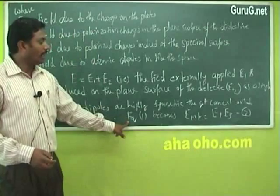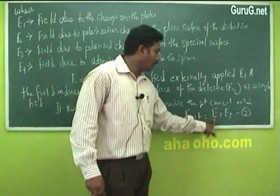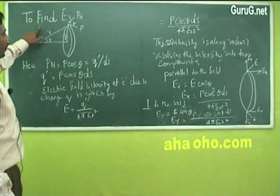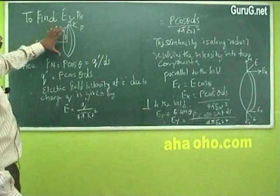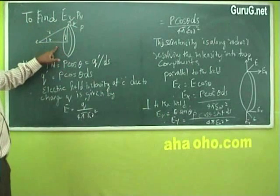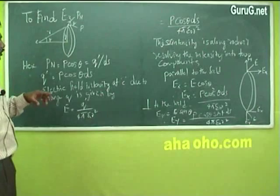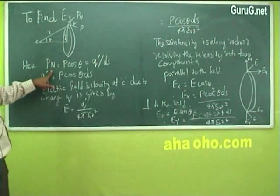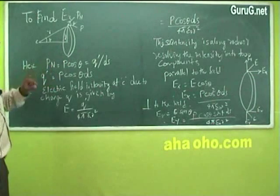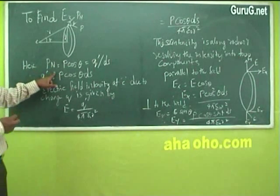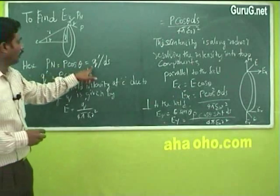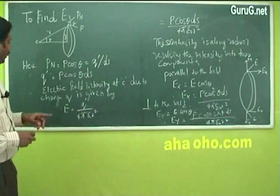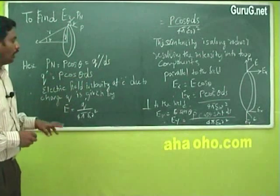To find E3, let us consider the small ring element. Q is the charge polarization on the ring, and pn is the polarization component. Here pn = p·cosθ = Q'/ds, where ds is the surface area. Therefore Q' = p·cosθ·ds. The electric field intensity at center C due to charge Q' is given by E = p·cosθ·ds / (4πε₀r²).